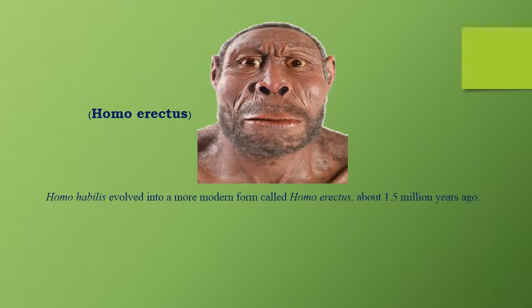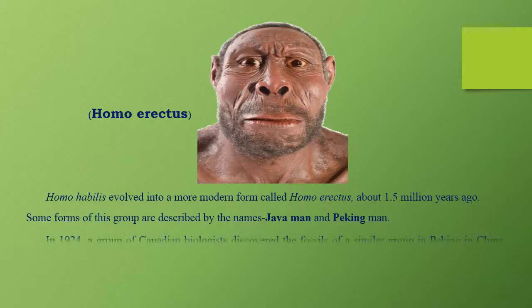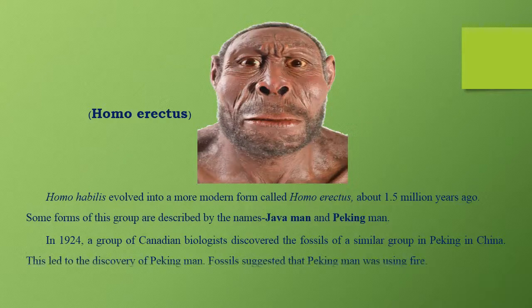Homo habilis evolved into a more modern form called Homo erectus about 1.5 million years ago. Some forms of this group are described by the names Java Man and Peking Man. In 1924, a group of Canadian biologists discovered fossils of a similar group in Peking, China. Fossils suggested that Peking Man was using fire.